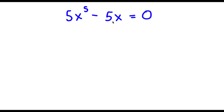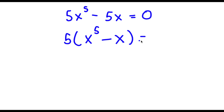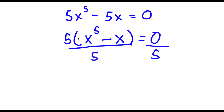Alright, so I have 5x to the power of 5 minus 5x is equal to 0. The first thing I'm going to do is factor out 5. So if I factor out 5, I get 5 times x to the power of 5, since 5x⁵ divided by 5 is simply x to the power of 5. And negative 5x divided by 5 is simply negative x. So now this is equal to 0. Now I'm going to divide both sides by 5, so we can get rid of this 5. These 5s cancel out and 0 divided by 5 is simply 0. So now I'm left with x to the power of 5 minus x is equal to 0.